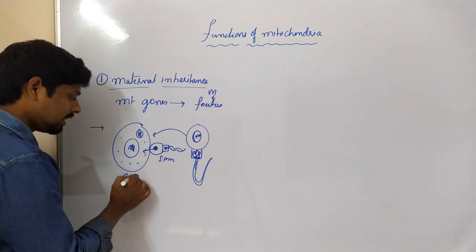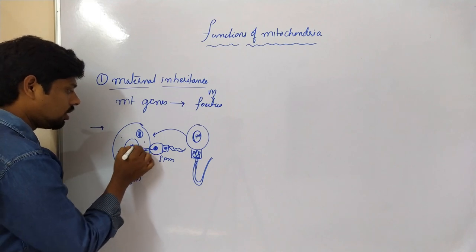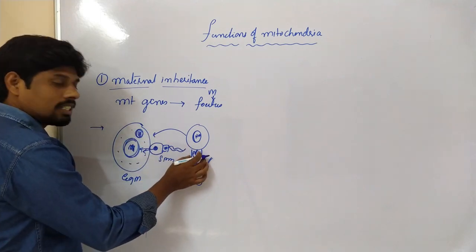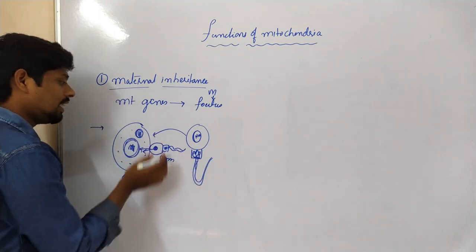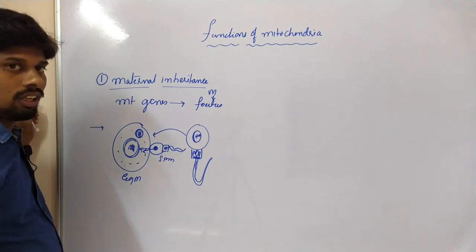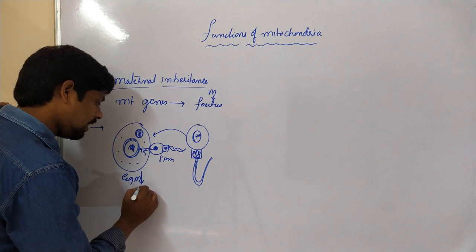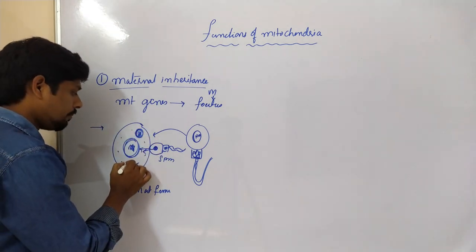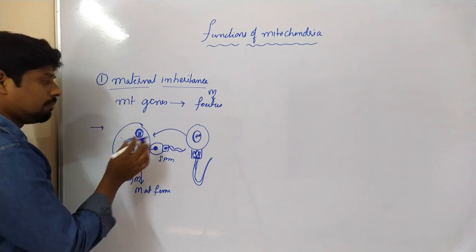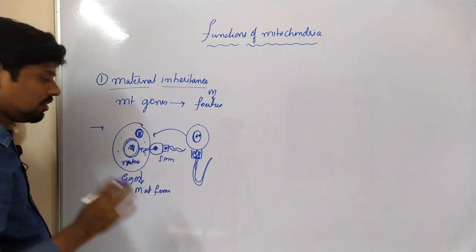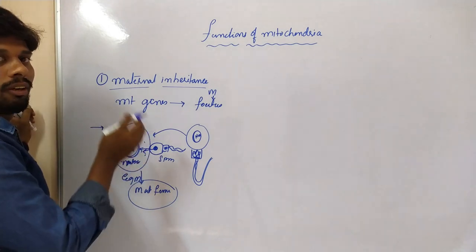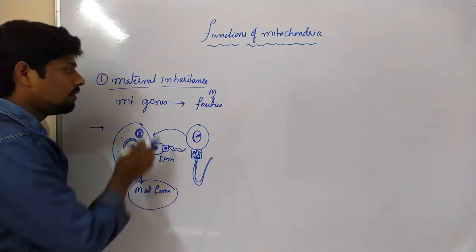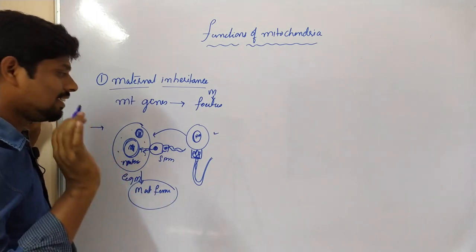The male genetic material from sperm and the female genetic material from the egg together form a zygote. However, the male mitochondrial genetic material cannot transfer from the sperm to the egg. That is why the fetus — whether male or female — receives the mitochondrial genome only from the mother. This is true in all eukaryotes except yeast.